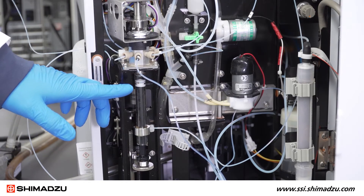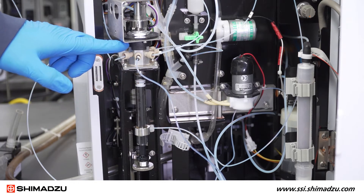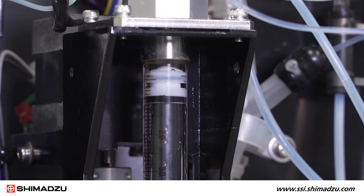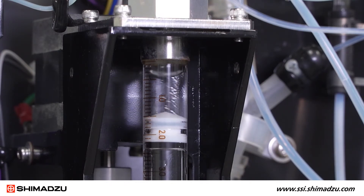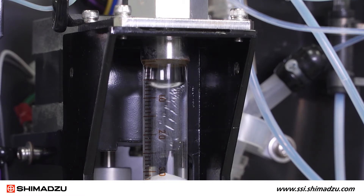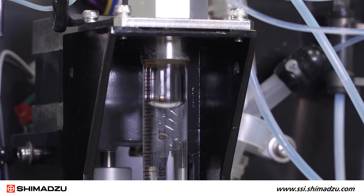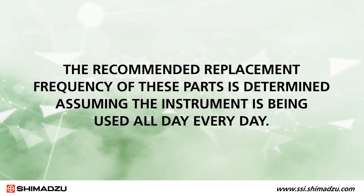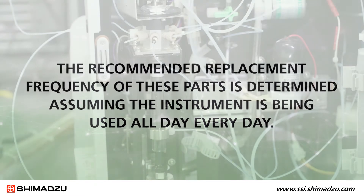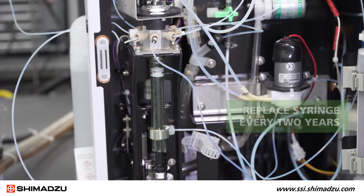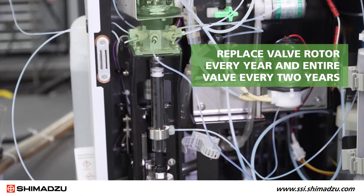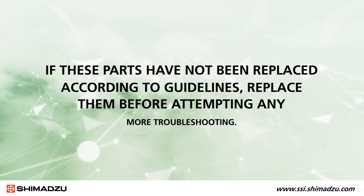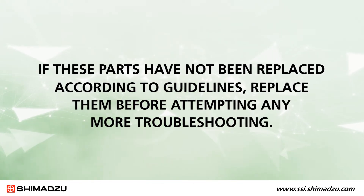A worn-out syringe, syringe plunger tip, 8-port valve, or 8-port valve rotor could also cause poor reproducibility. If the syringe and valve are not sealed correctly, then air will be pulled in as the syringe and valve move. This will cause errors in consistent sampling and failure to inject a consistent aliquot of sample into the combustion tube for each replicate injection. The recommended replacement frequency of these parts assumes the instrument is being used all day every day. The syringe itself should be replaced every 2 years and the plunger tip every 6 months. The valve rotor should be replaced every year and the entire valve every 2 years. If these parts have not been replaced according to guidelines, replace them before attempting any more troubleshooting.